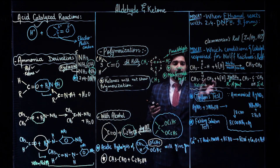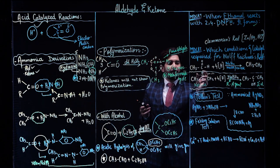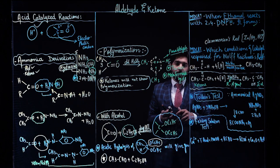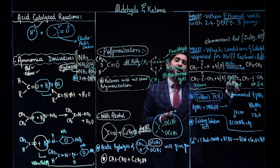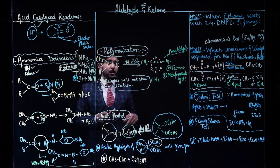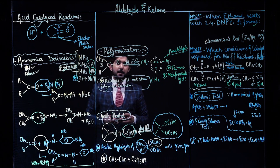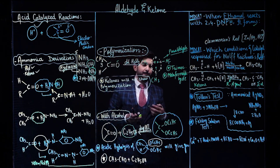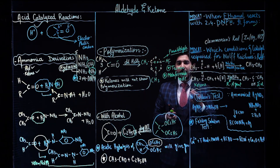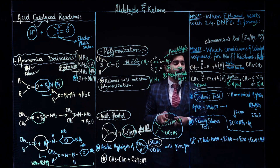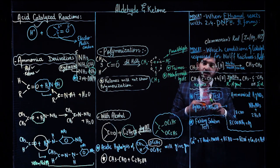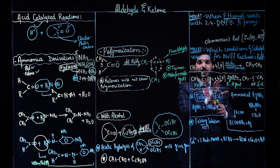If I am using methanal, reduction using NaBH₄ gives methanol, and methanol's reduction gives methane. This is the concept of reduction. Reduction can also be carried out using nickel, platinum, or palladium catalysts for hydrogenation. The same reduction process applies in this way as well.